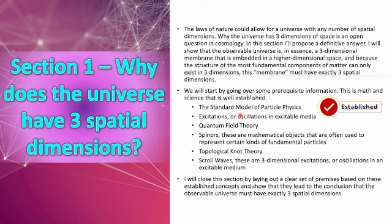We'll cover spinors, which are mathematical objects — counterintuitive and most often used as the representation of certain kinds of fundamental particles. We're going to talk about topological knot theory and then scroll waves, which are three-dimensional excitations. We're going to close this section by laying out a clear set of premises based on these established concepts and show that they lead to the conclusion that the observable universe must have exactly three spatial dimensions.